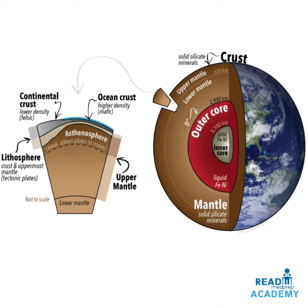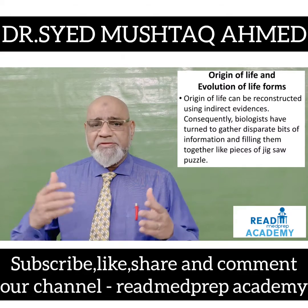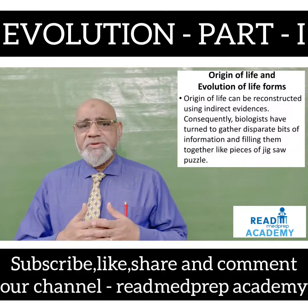A cross-section of the earth shows the lower mantle, above that the upper mantle, and above that the lithosphere, which is the crust and the uppermost mantle, made into tectonic plates. The asthenosphere is a weak part that allows plates to move. Above the lithosphere is the continental crust, which is lower density and felsic. Ocean crust is high density and mafic.